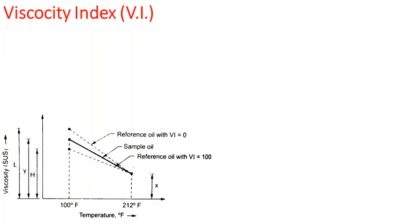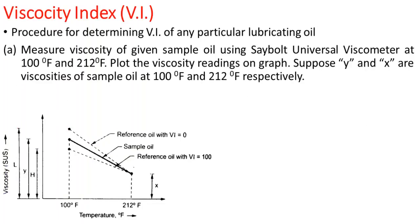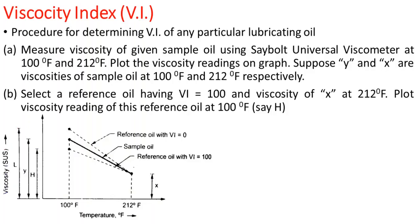This is how the viscosity index of a particular lubricating oil is determined. First, measure the viscosity of a given sample oil using a Saybolt Universal Viscosity meter at 100°F and 212°F. Then plot the viscosity readings on a graph. In the diagram, Y and X are the viscosities of the sample oil at 100°F and 212°F respectively.